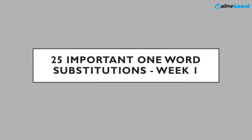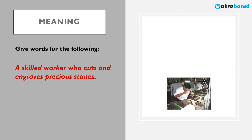So let's begin and move to the PPT. For week one, we have 25 most important one word substitutions. A picture is there for a few of these so that you remember the meanings. First one: a skilled worker who cuts and engraves precious stones. You can see a worker who works on gemstones — who cuts and engraves precious stones.